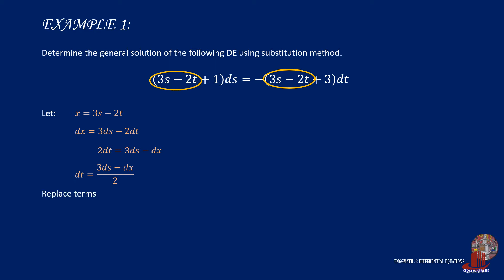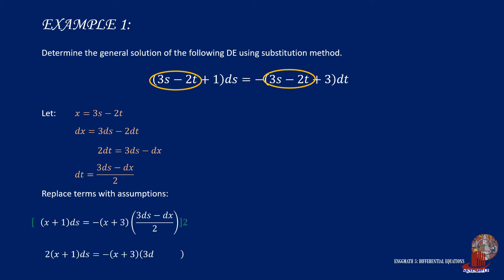Then replace x and dt in the original equation, which simplifies it as x plus 1 times ds is equal to negative x plus 3 times dt, which is taken as 3ds minus dx all upon 2. Eliminate the denominator by multiplying the whole thing by 2, so we get 2 times x plus 1 times ds is equal to negative quantity of x plus 3 multiplied by the quantity 3ds minus dx.